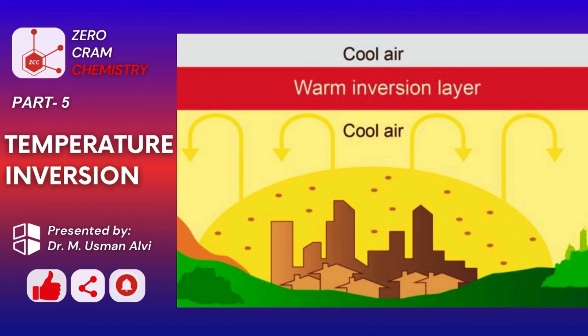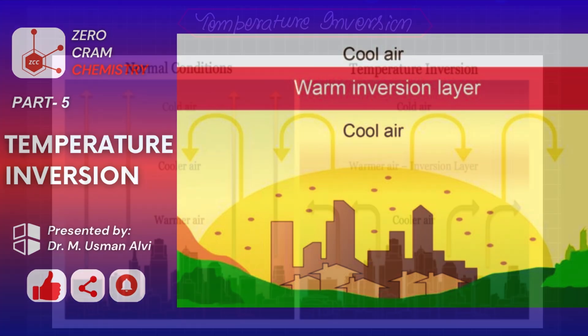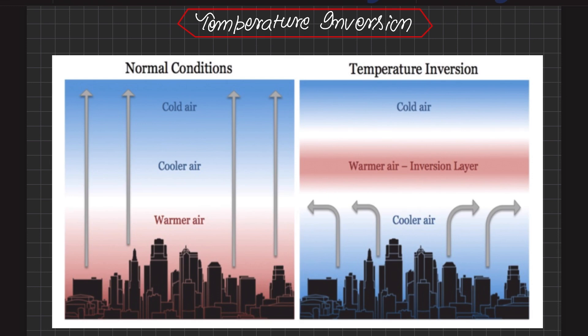This is part 5 of the lecture series about the atmosphere. Under normal conditions, temperature usually decreases with increase in altitude in the troposphere at a rate of one degree for every 165 meters — this is called the normal lapse rate. But on some occasions the situation gets reversed and temperature starts increasing with height rather than decreasing.